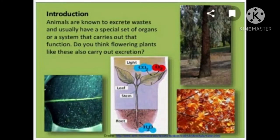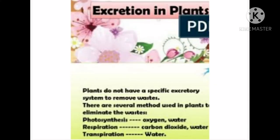A variety of end products are produced during metabolism, and nitrogenous wastes are important among these. All animals have a special type of excretory organs to eliminate the waste materials. But do flowering plants have such excretory organs? We will discuss now. Plants do not have a special excretory system to remove waste; instead there are several methods in plants to eliminate waste.